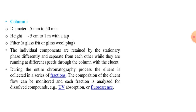The column diameter is 5 mm to 50 mm and height is 5 cm to 1 meter, with a tap. The filter used in the column is made of glass frit or glass wool plug. Individual components are retained by the stationary phase differently and separated from each other as they run at different speeds through the column with the eluent.